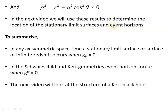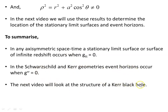To summarize: in an axisymmetric spacetime, a stationary limit surface — or surface of infinite redshift — occurs when g_tt = 0. In the Schwarzschild and Kerr geometries, event horizons occur when g^{rr} = 0. In the Schwarzschild case, both conditions coincide and give the same surface — the event horizon and stationary limit surface are one and the same. But in the Kerr geometry, these are separate and different surfaces. In the next video we'll look at the structure of a Kerr black hole.